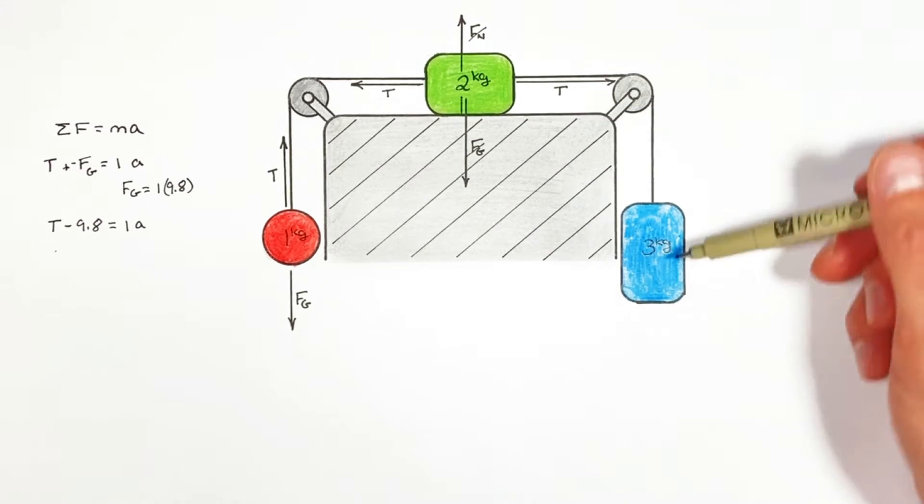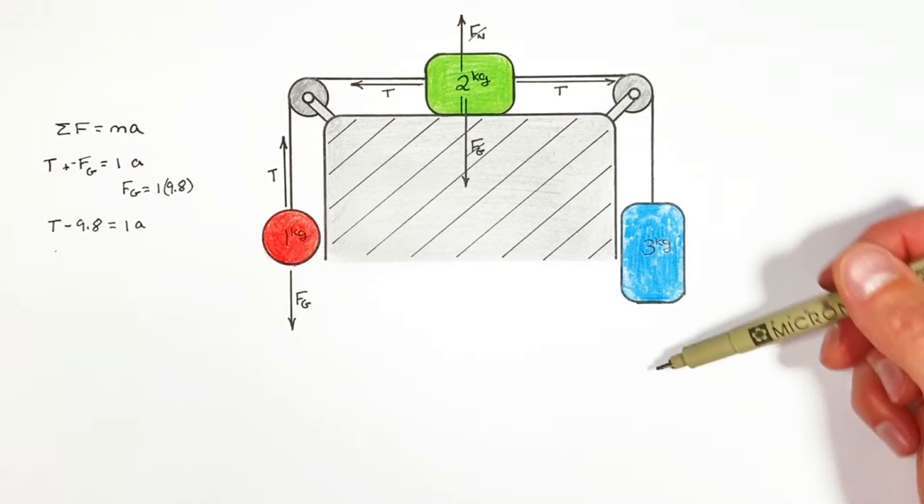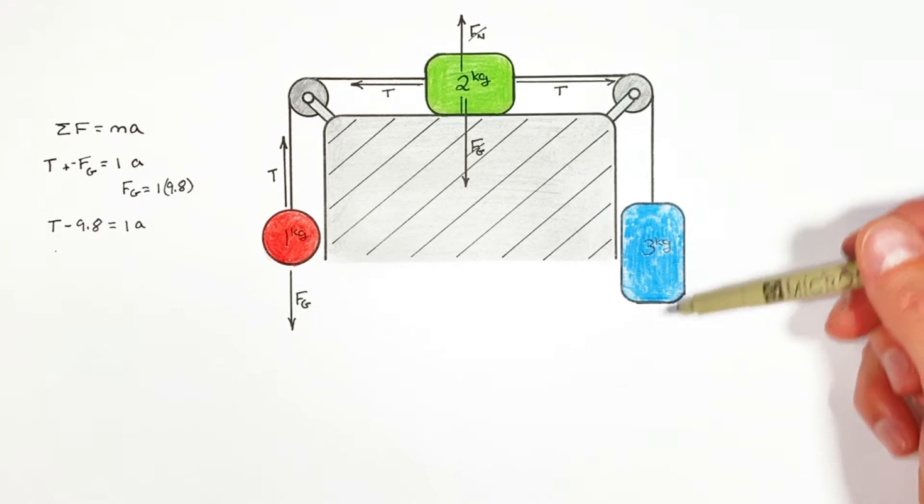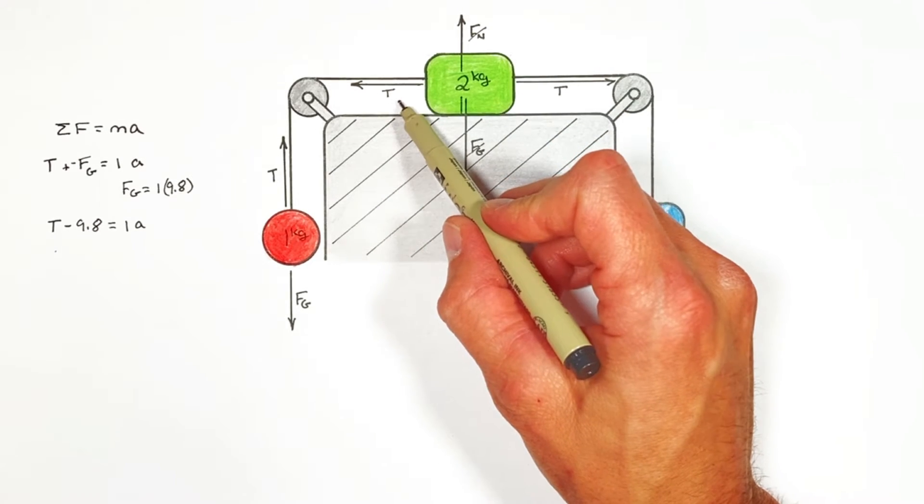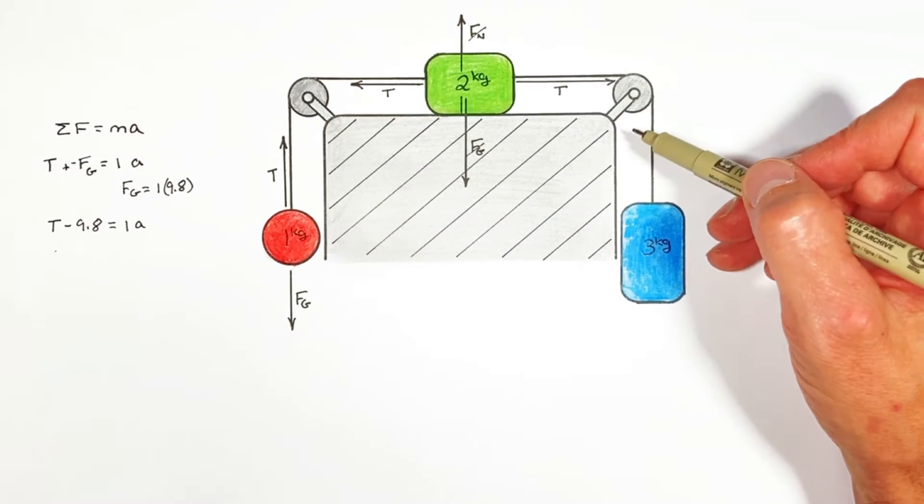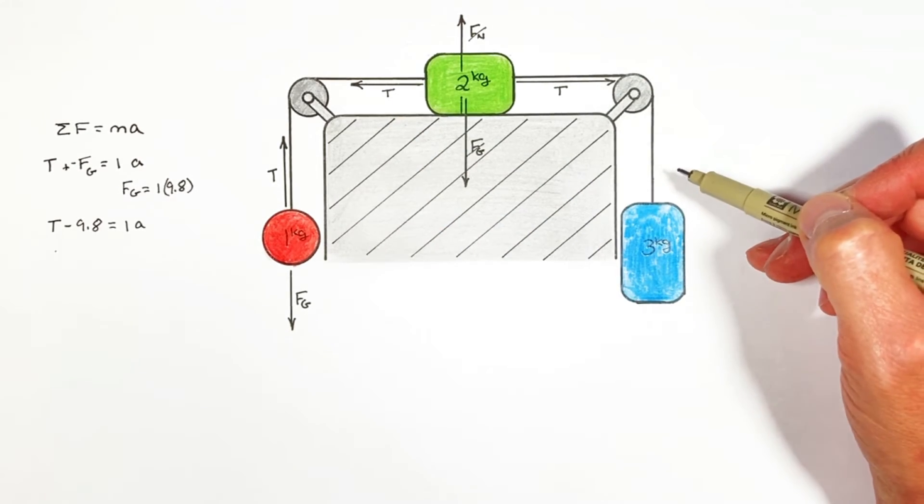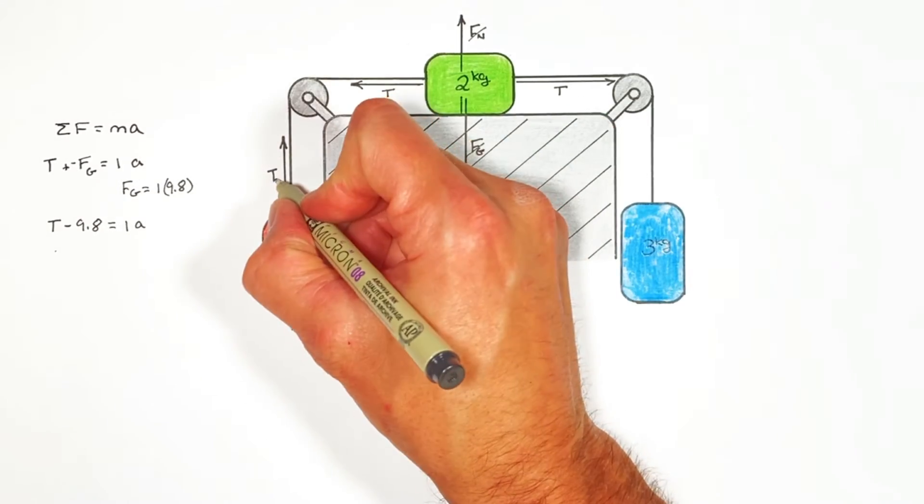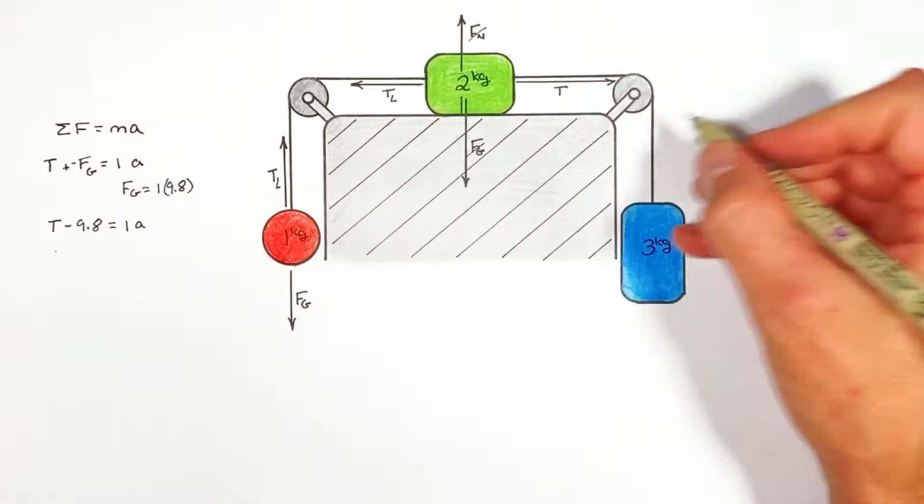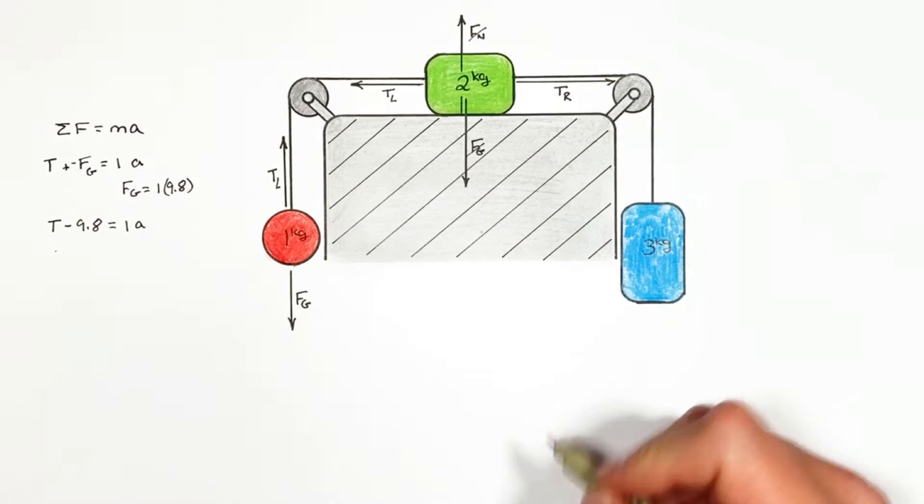Well we know if we release the system from rest this heavy block is going to pull everything so that this heavy block moves downward. Which means this tension has to be greater than that tension. Which means we have to complicate this problem just a little bit at this point. Because we have two different strings we have two different tensions. So I'm going to call this tension in the left string and this tension in the right string.